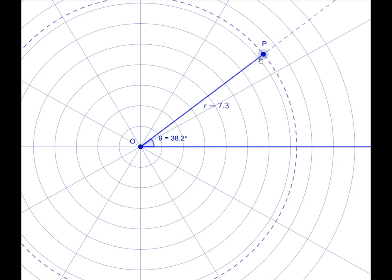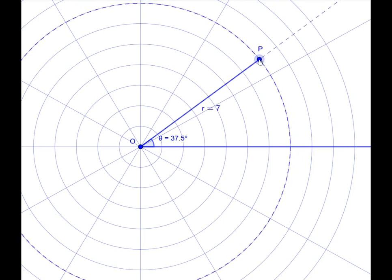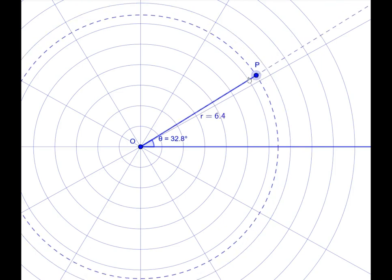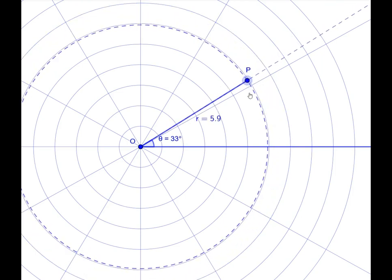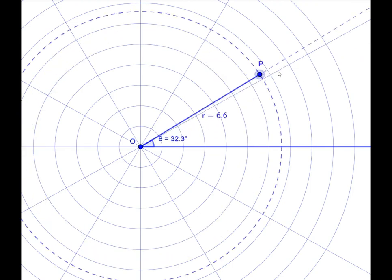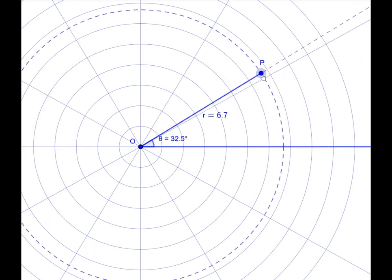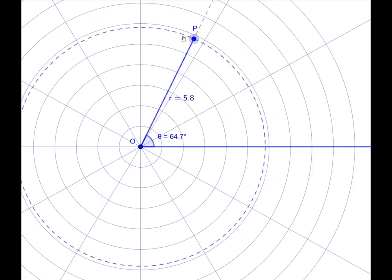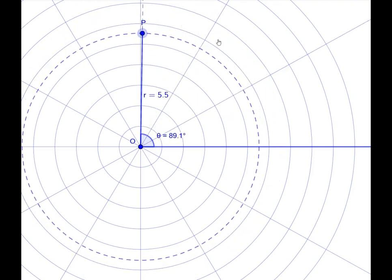Now, in this case, each of the circles represents a constant value of R. Everything on this circle has a value of R equals seven. Here it's six, and so on. Everything along this particular ray has an angle value of 30 degrees. Here it's 60. Here it's 90, and so on.